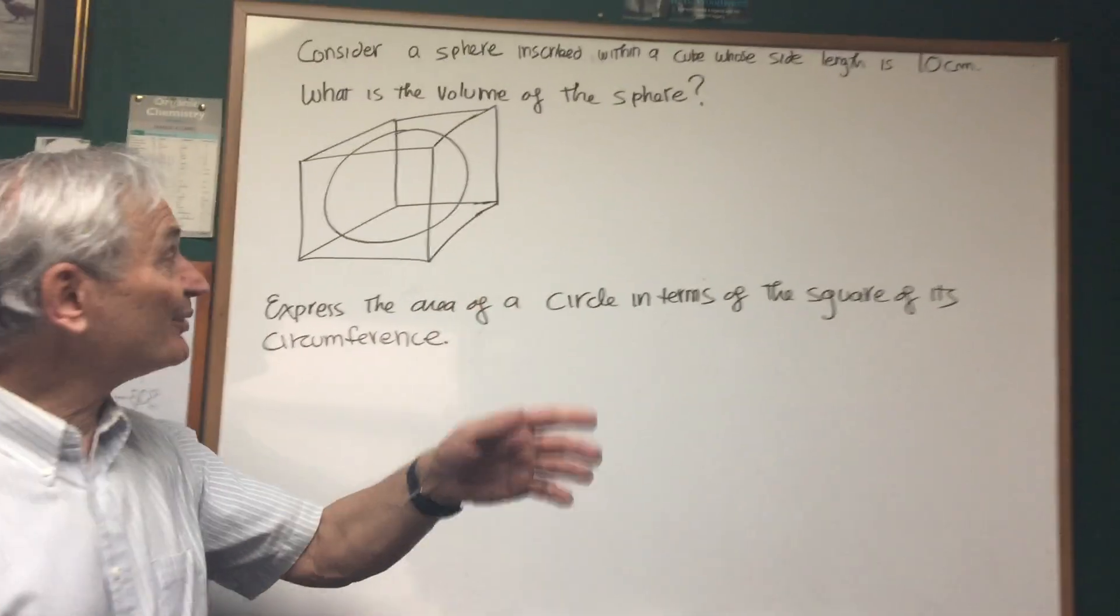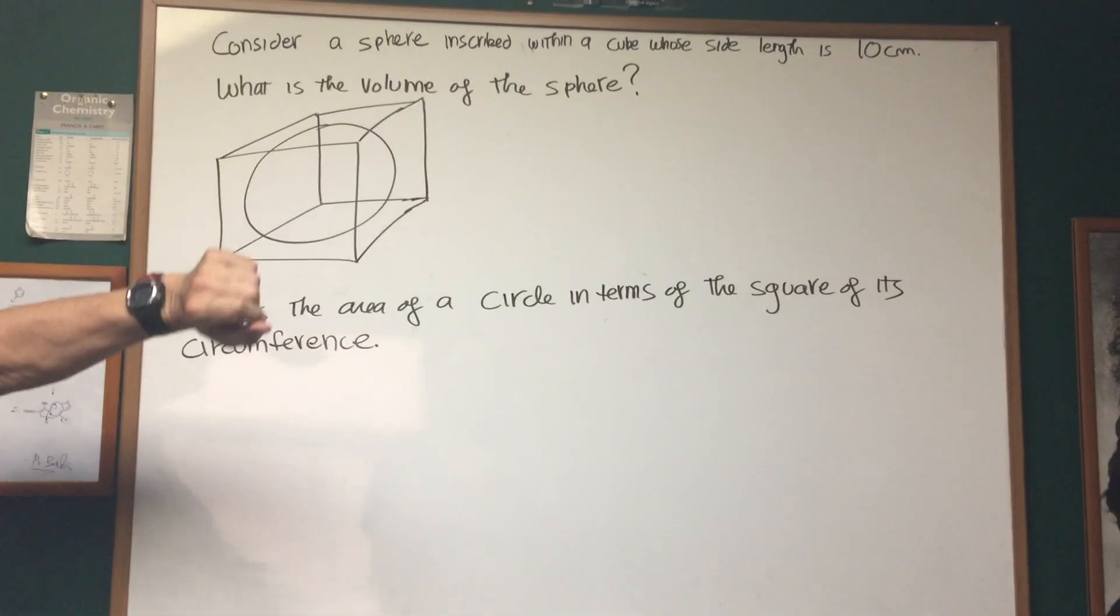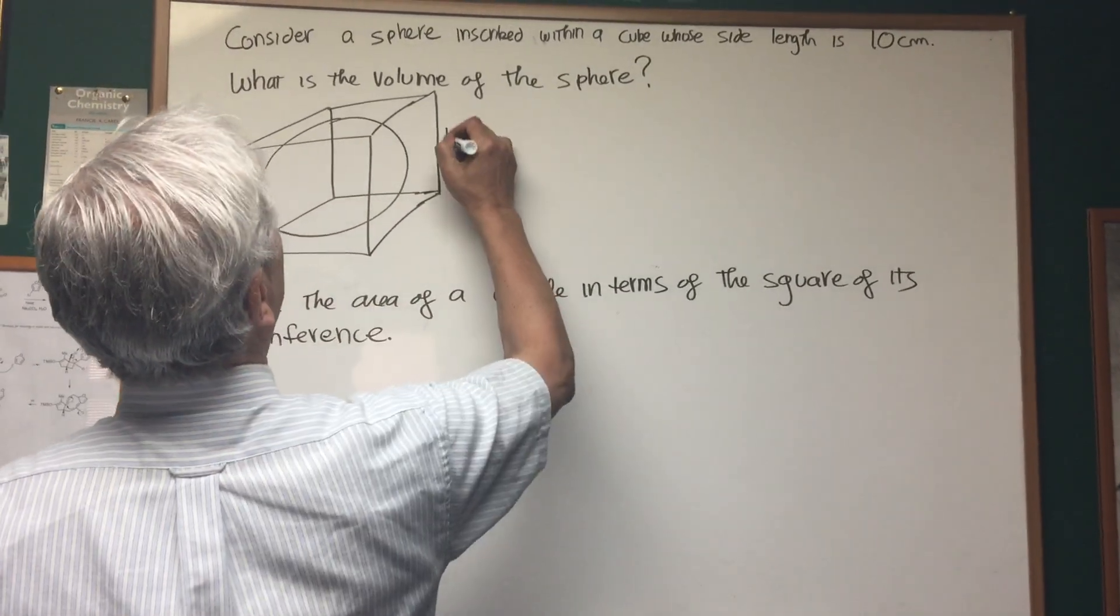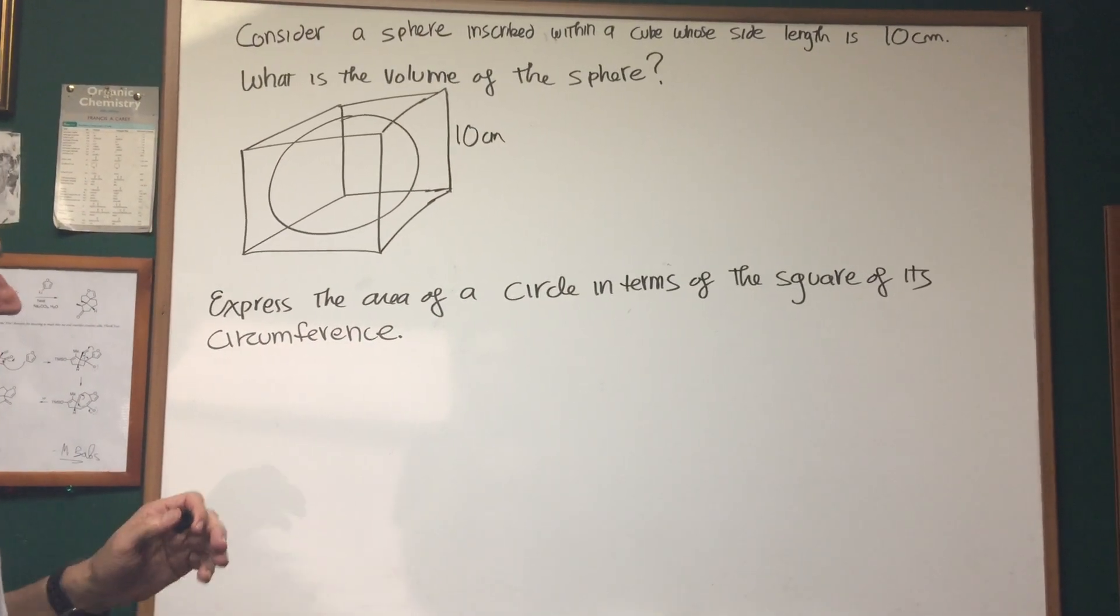Okay, let's take a look. There's a diagram here. Consider a sphere inscribed within a cube whose side length is 10 centimeters. What is the volume of the sphere? Okay, so side of the cube is 10 centimeters.